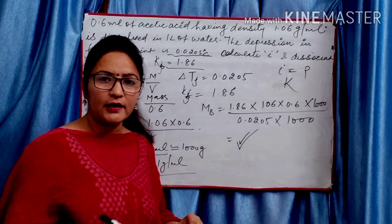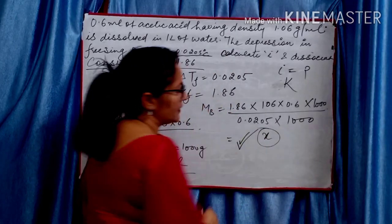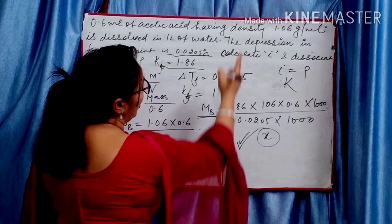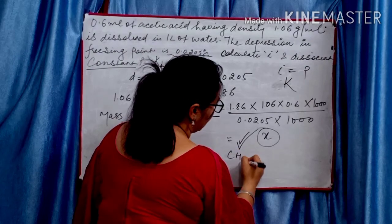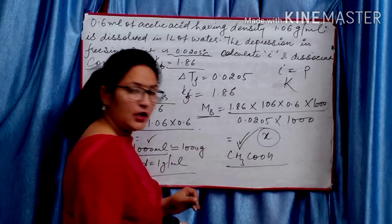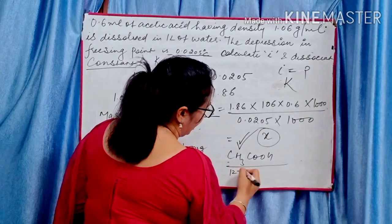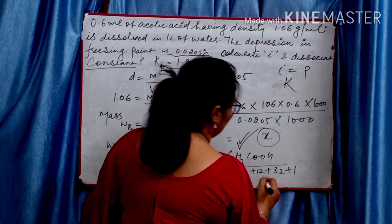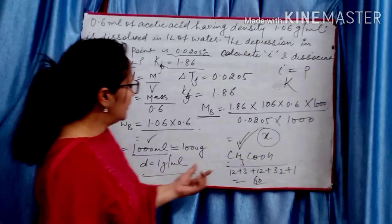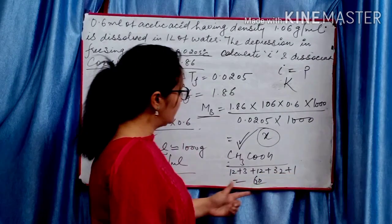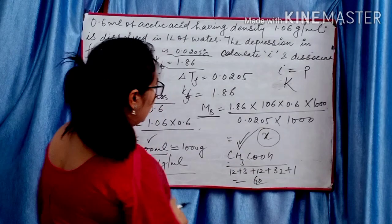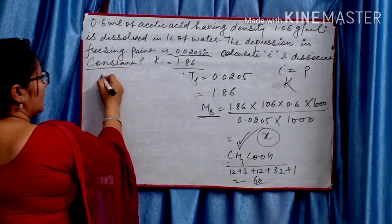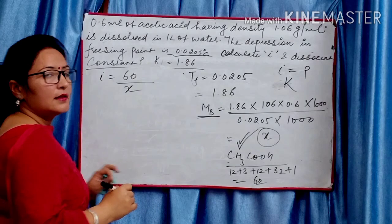Normal molar mass of acetic acid CH₃COOH: 12 + 3 + 16 + 12 + 32 + 1 = 60. So i = normal molar mass / observed molar mass = 60 / X. This gives the Van't Hoff factor i.